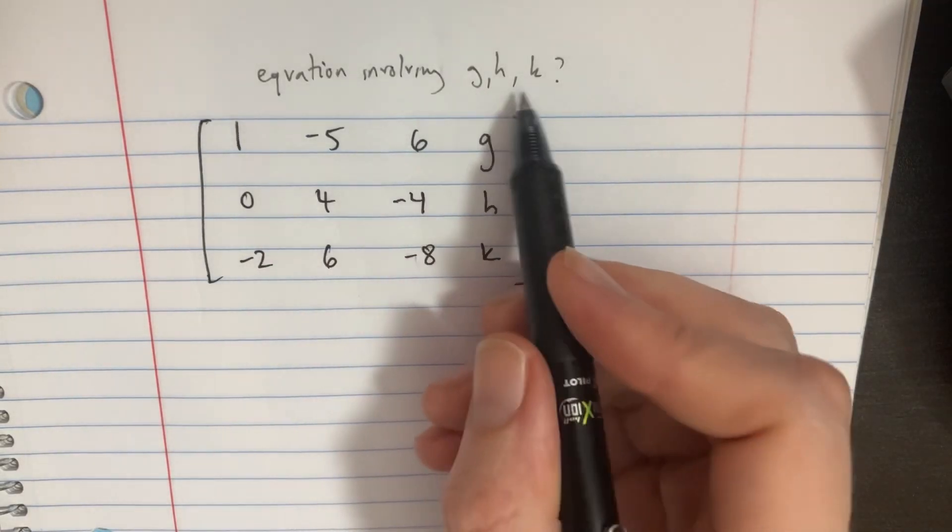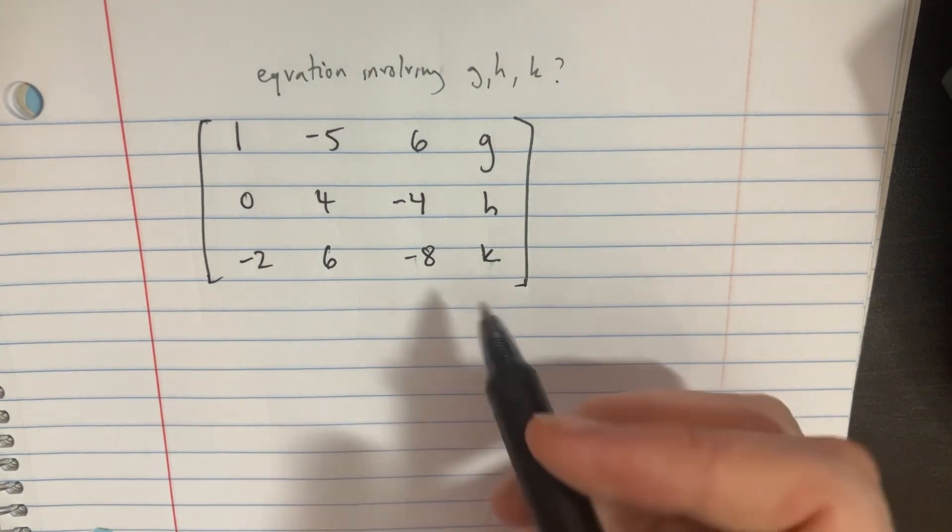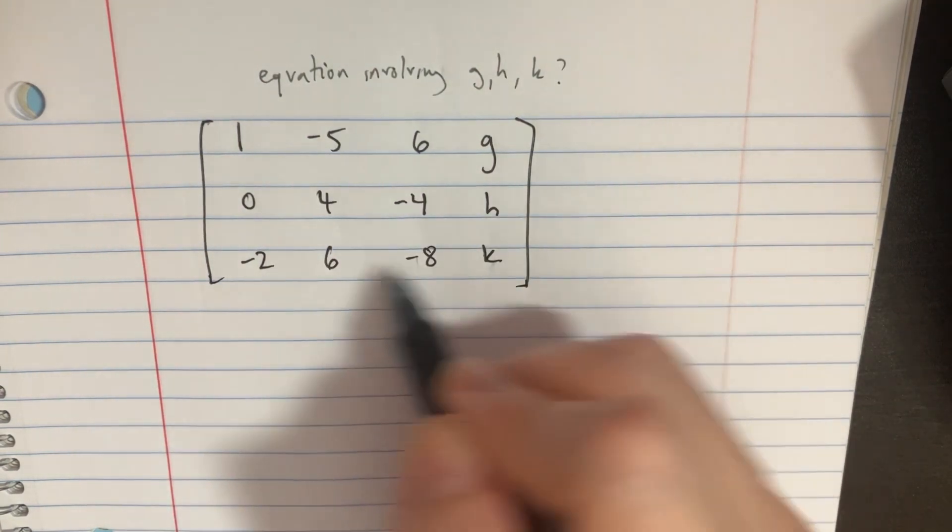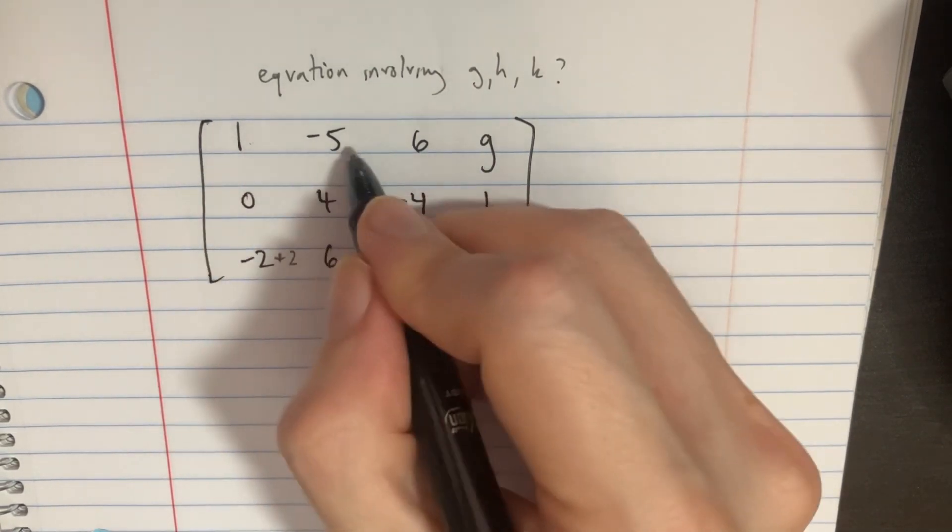Let's try to find an equation involving g, h, and k that would solve this and make it work. In order to do that, let's see if we can go ahead and add 2 to this by multiplying this row by 2.